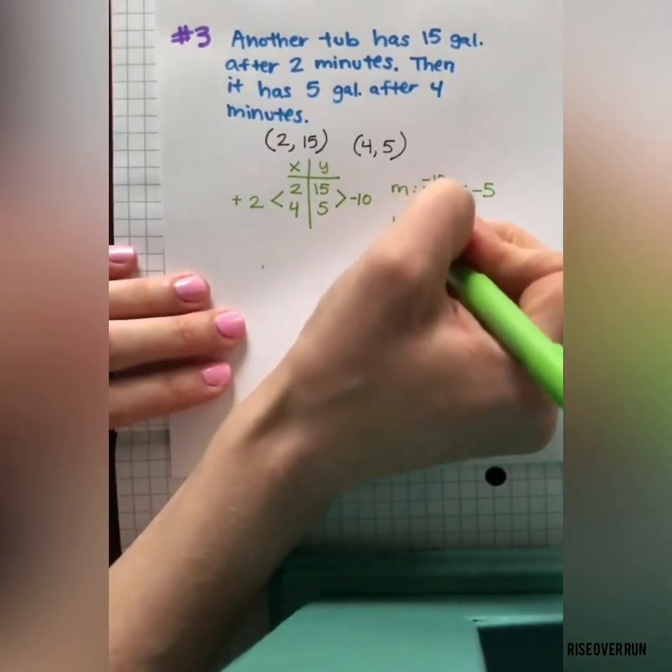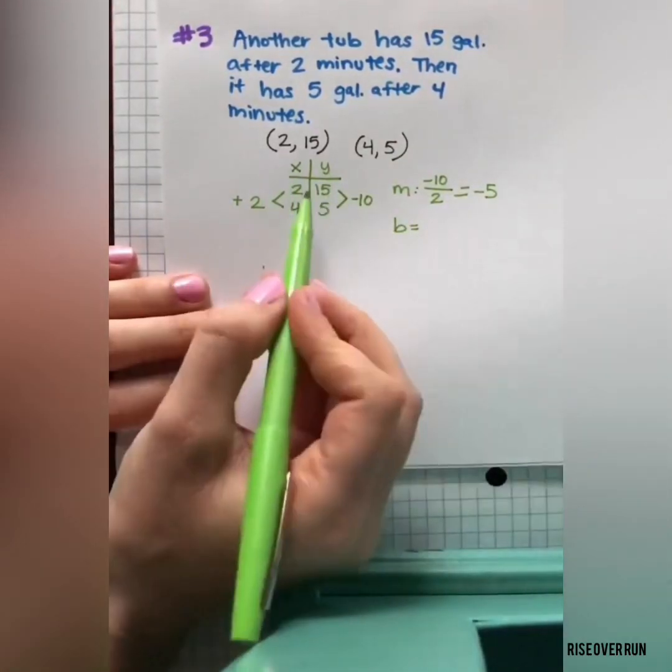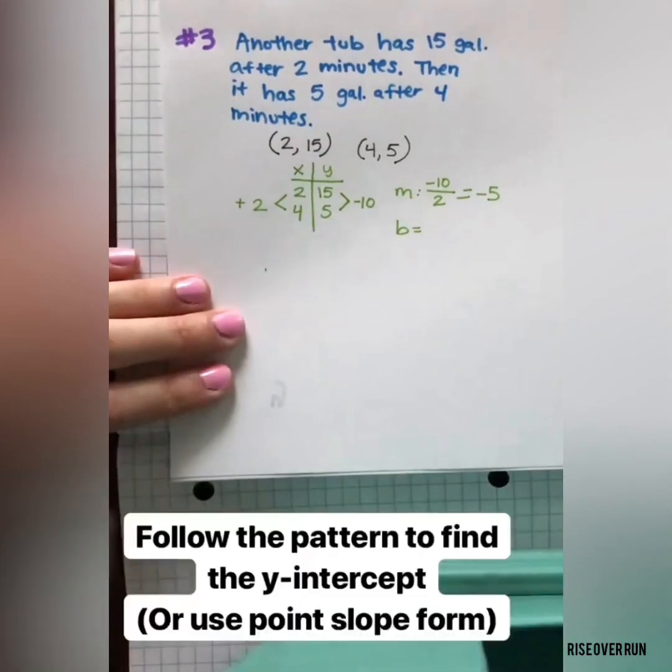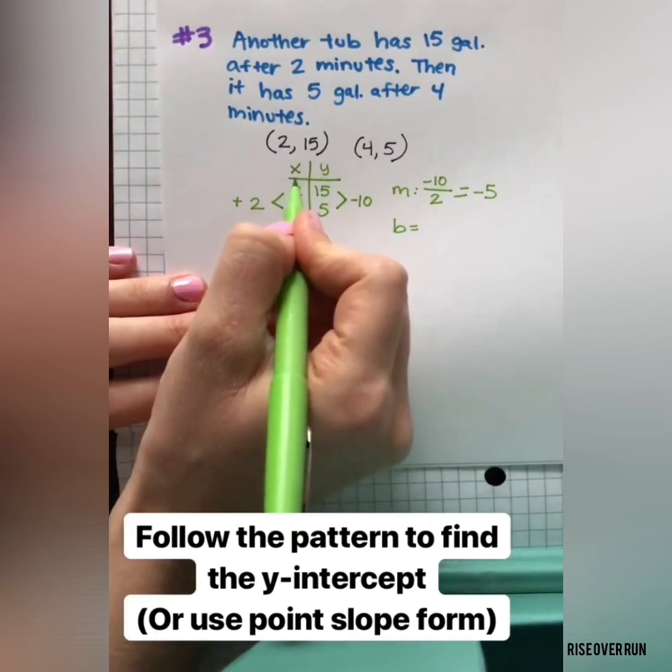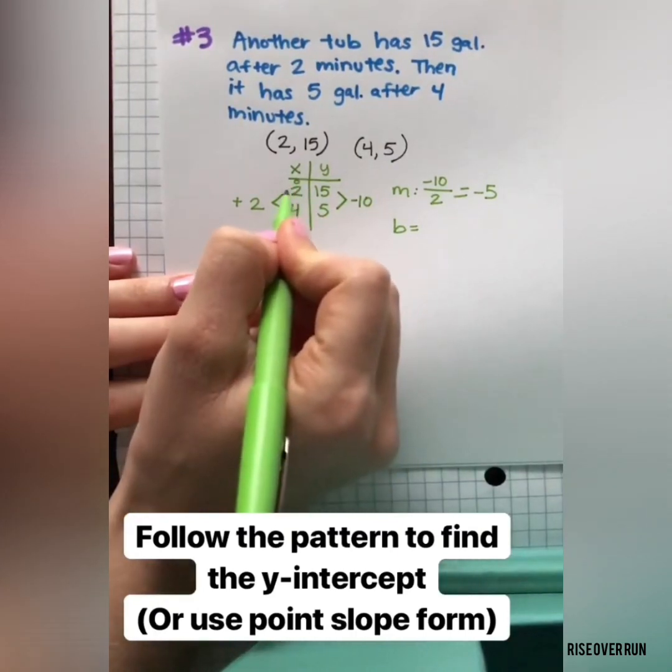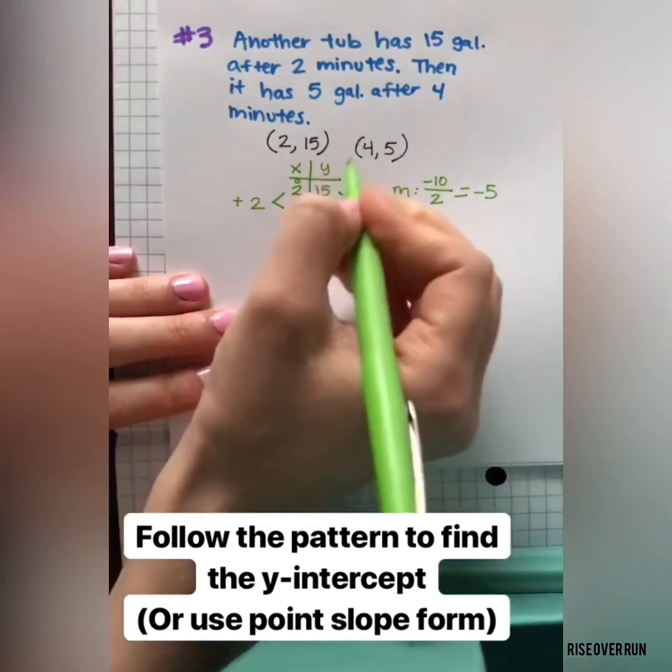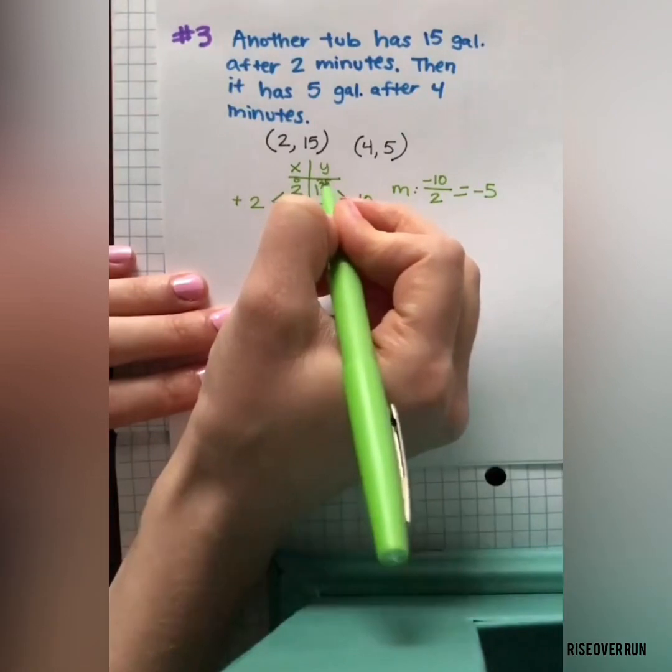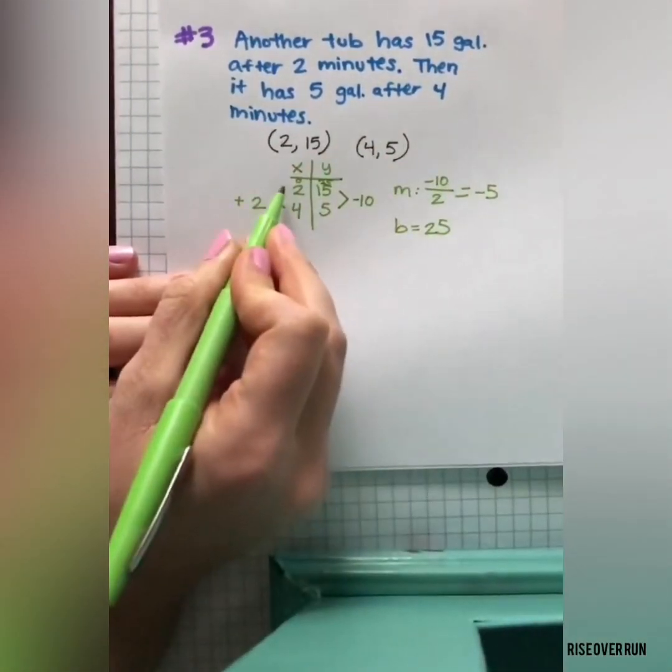The y-intercept or the b value, we want to look for when x equals 0. In this case, there isn't a 0, but we can work backwards to find it. So I could add 0 to this table and just follow the pattern. These are going by 2's, so that means I could continue this pattern and add 10 to get 25.